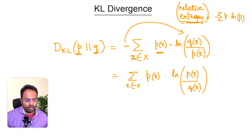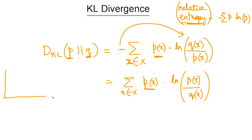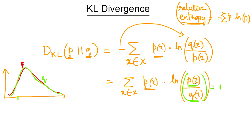Let's understand how this formula behaves. Say we have two distributions p and q that are very close to each other — in fact, let's say p and q are exactly the same. In the formula, p(x) divided by q(x) for any value of x would equal one. Taking the natural log of one gives zero, so this entire term becomes zero when p and q are equal.